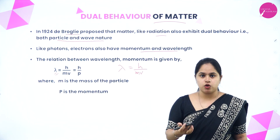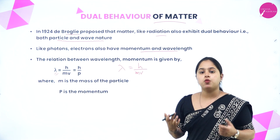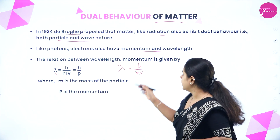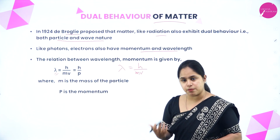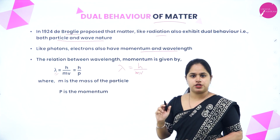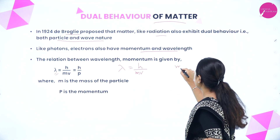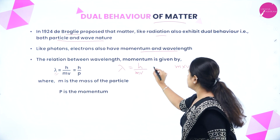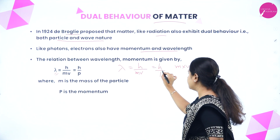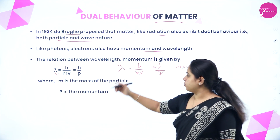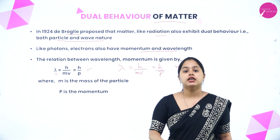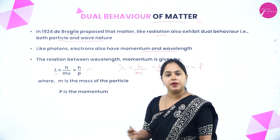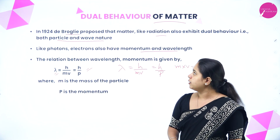Here, h is Planck's constant — 6.626 × 10⁻³⁴ joule second. M is the mass and v is the velocity, and mass times velocity equals momentum p. So the equation is lambda = h/p, where m is the mass of the particle and p is the momentum.